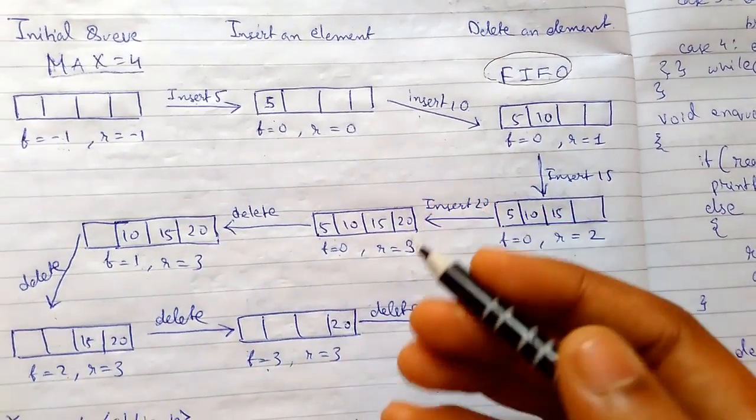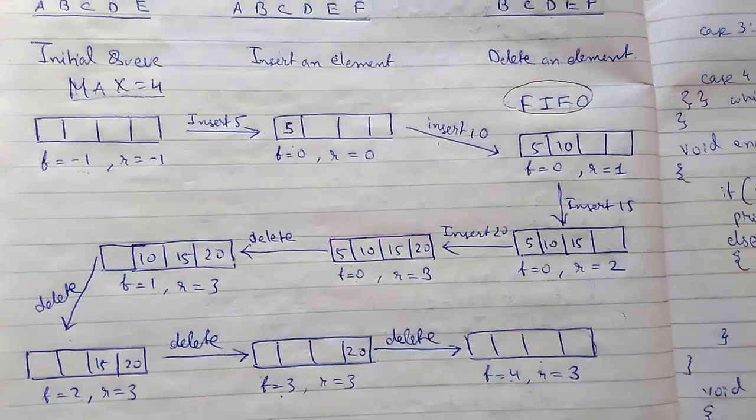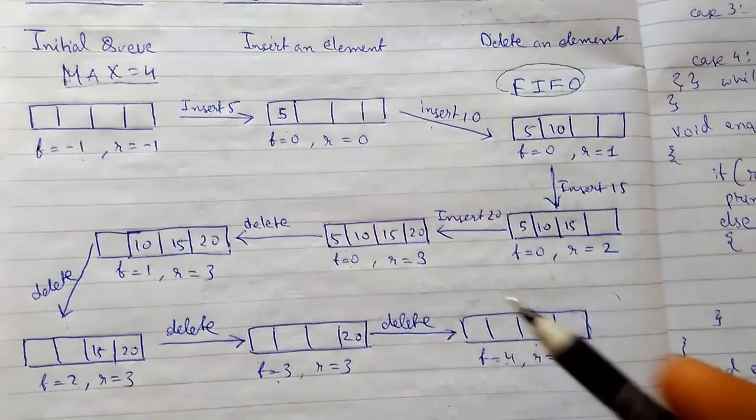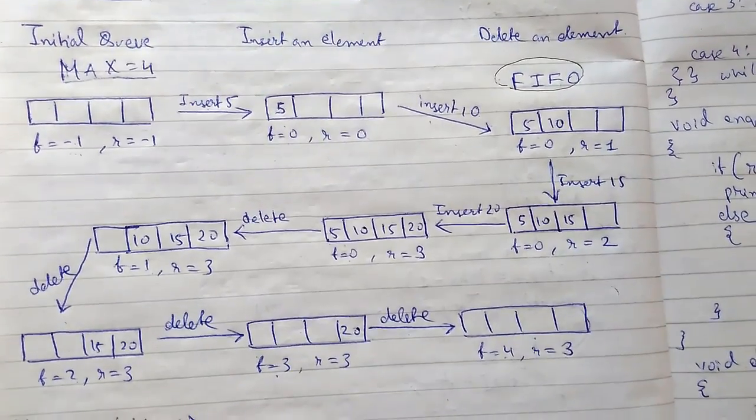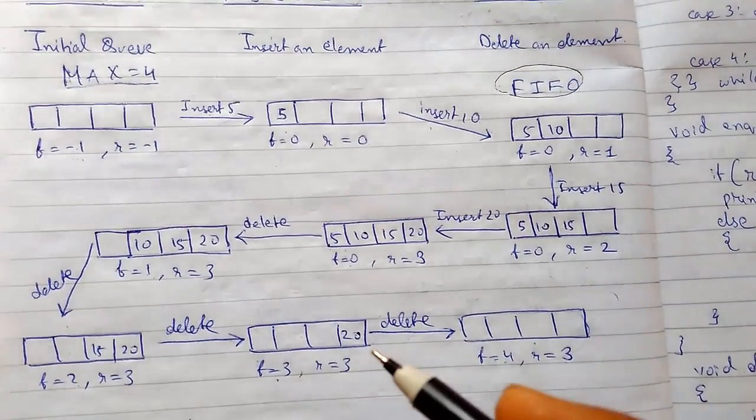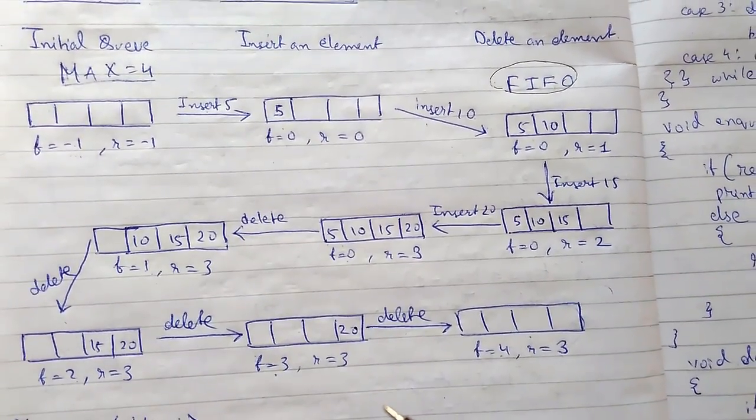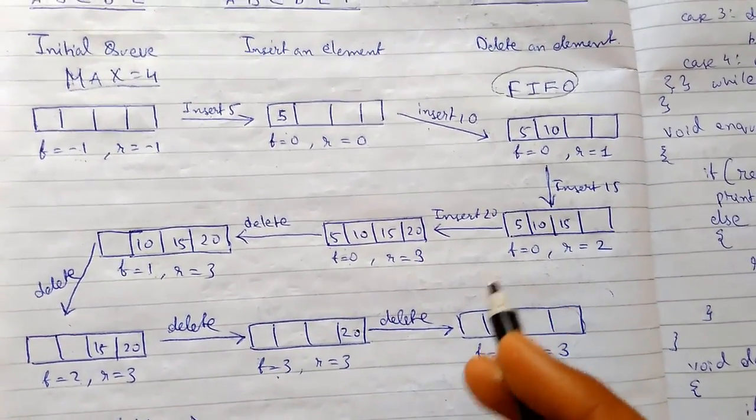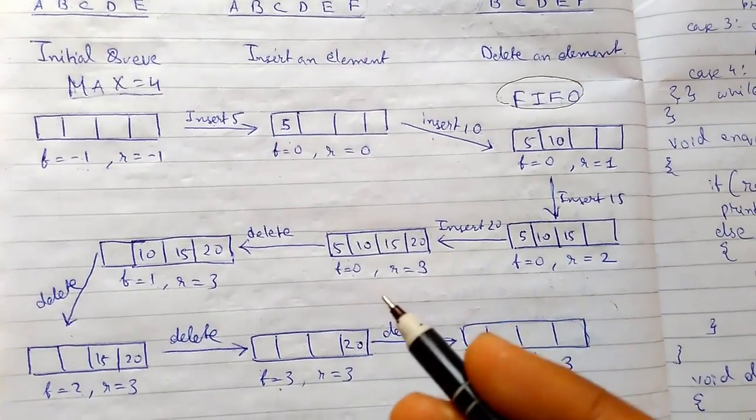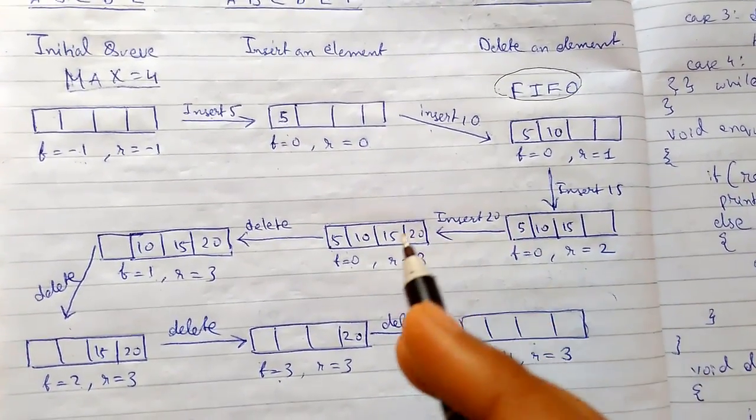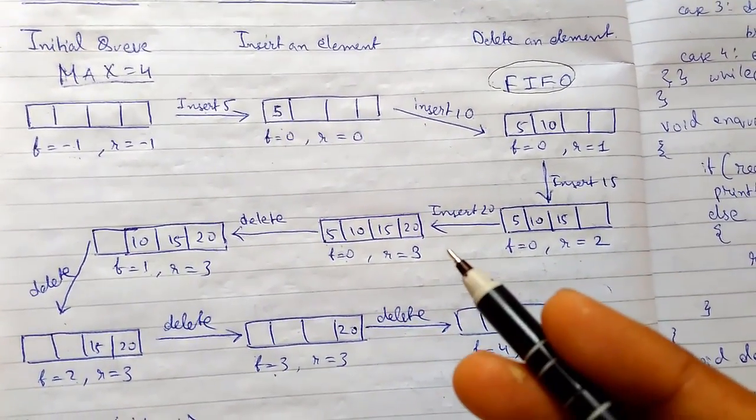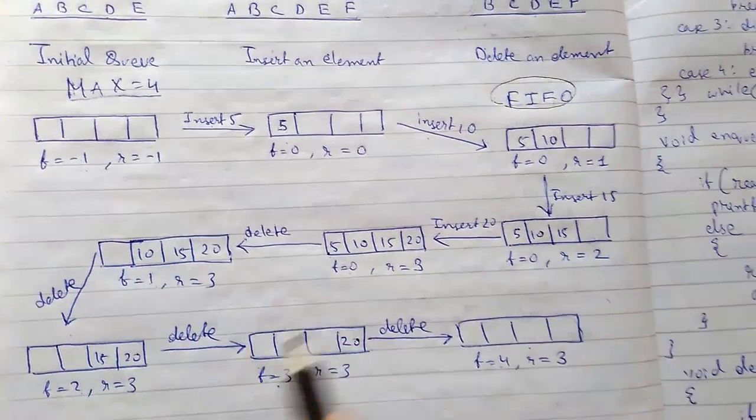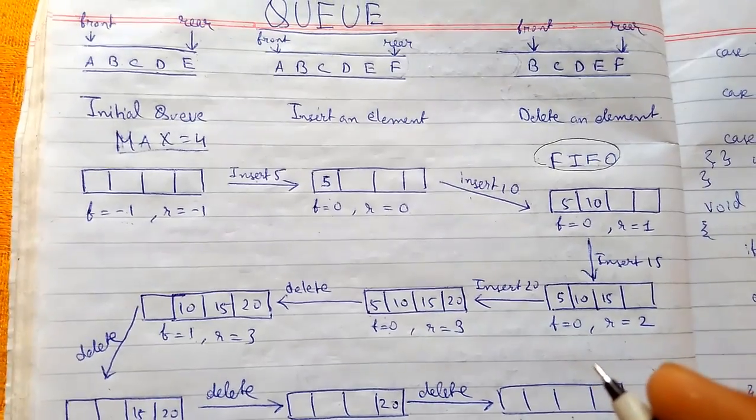Let me tell the basic definition, the bookish definition of queue. You can write it also. Queue is an ordered collection of homogeneous elements where insertion and deletion operations are done from the opposite ends. Queue is an ordered collection of homogeneous elements where insertion and deletion operations are done from the opposite ends, as you can see this. This is how queue works. Thanks for watching.